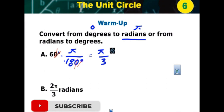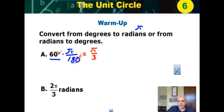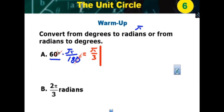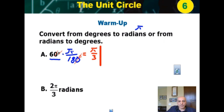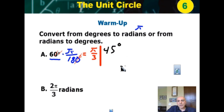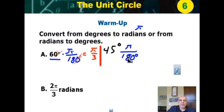Let's do a couple more. I want to do 45 and 30. How do you change 45 to pi radians? If you know the answer, chime in in the chat. You multiply by π over 180 and follow the same process. Cancel the degrees — 45 over 180 gives you 1 over 4, or π over 4.